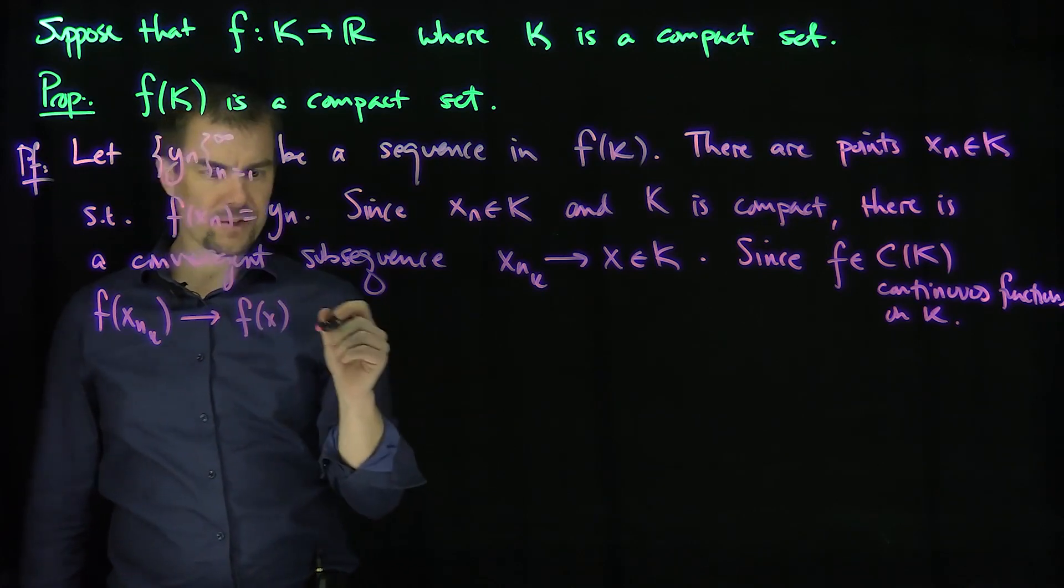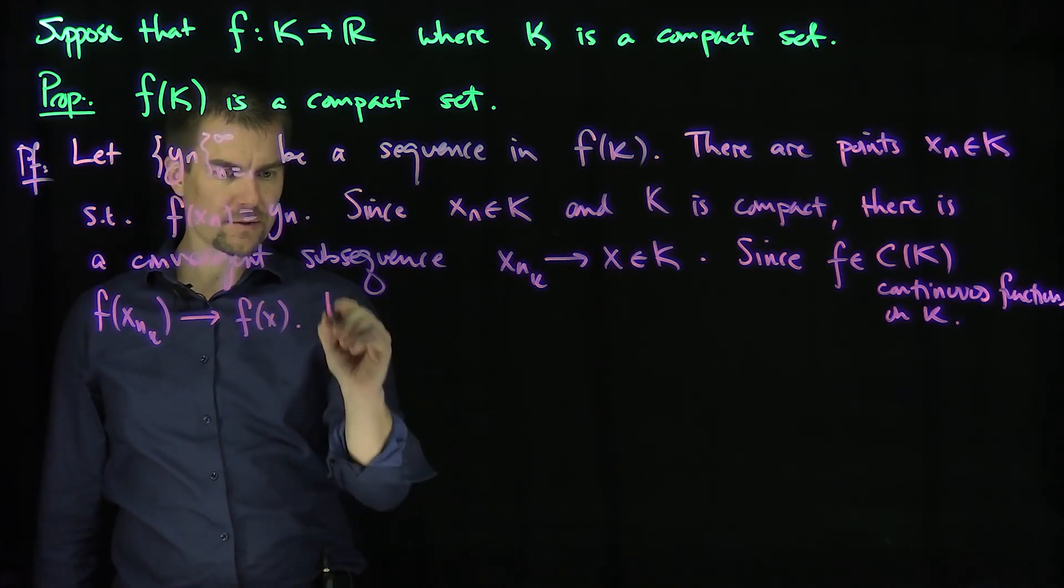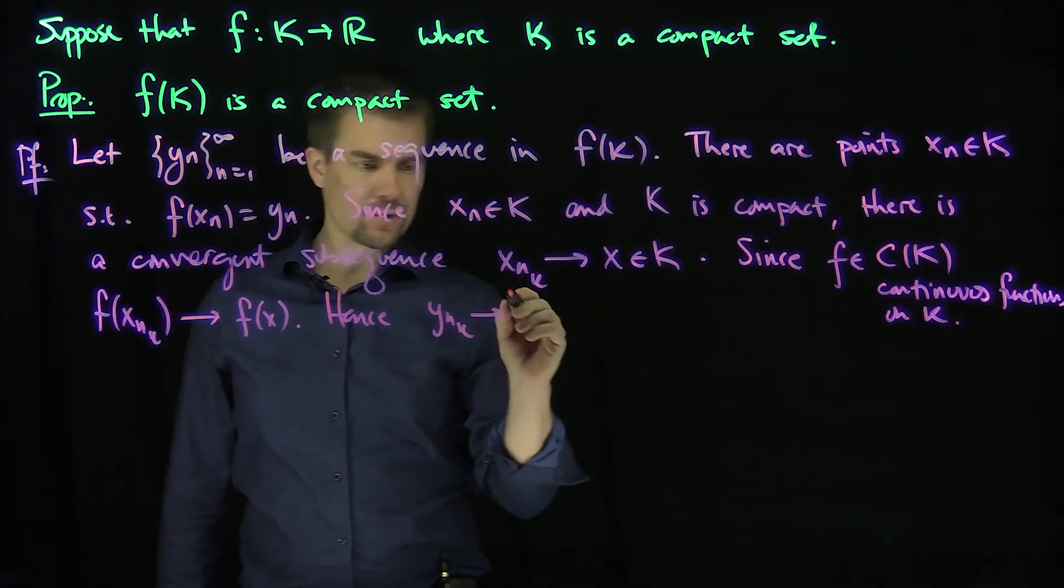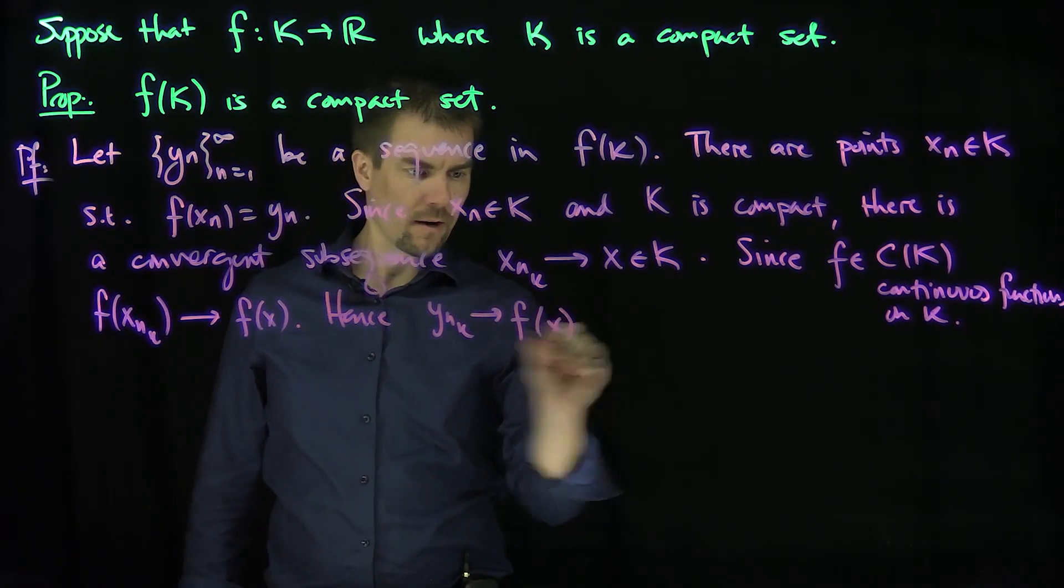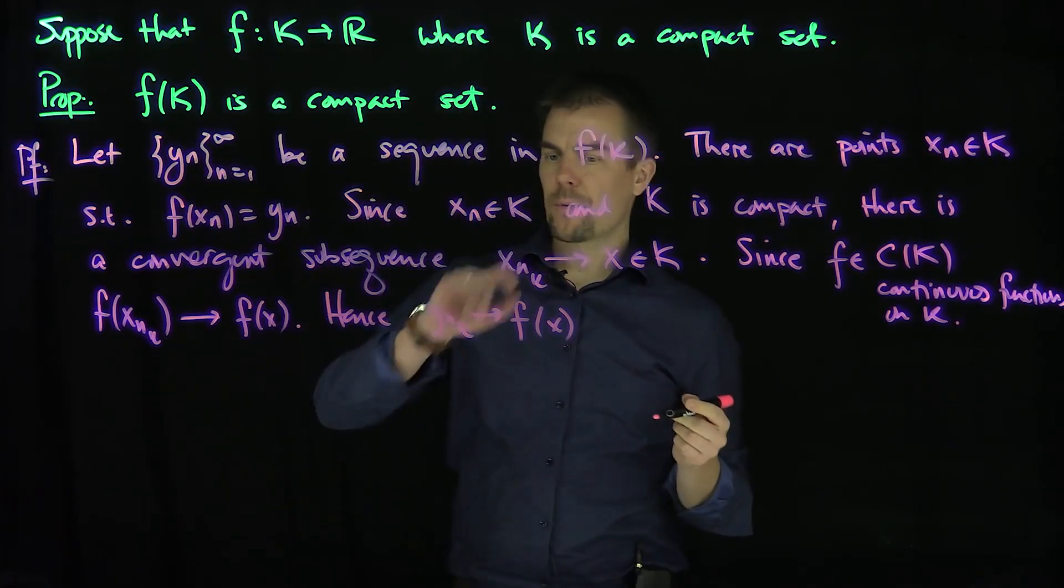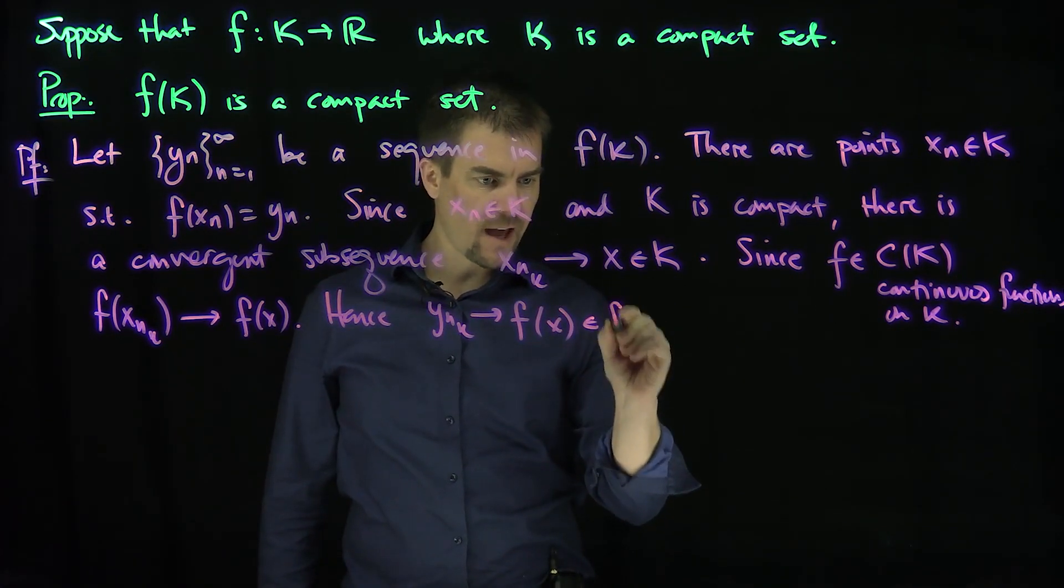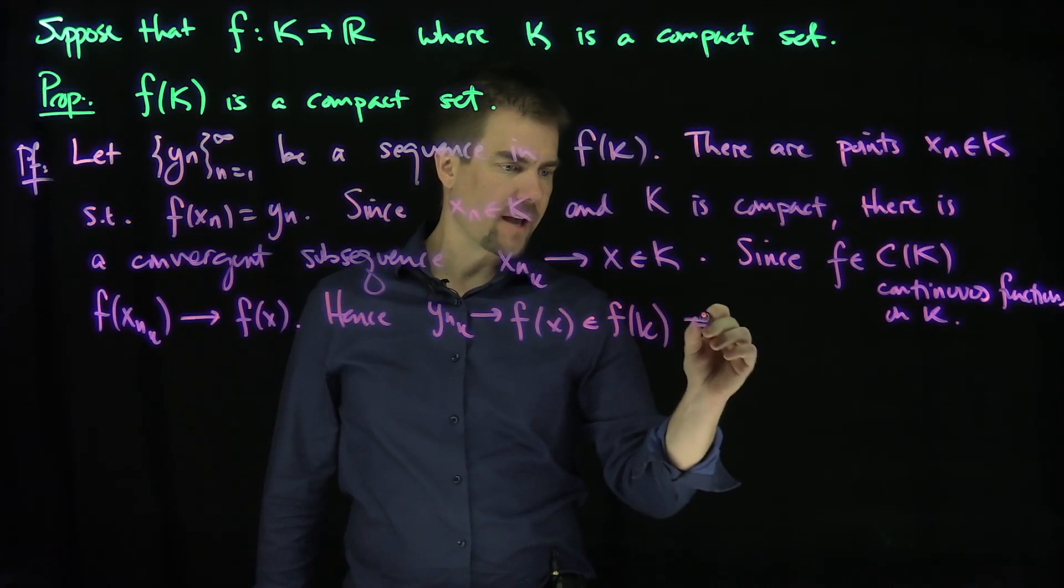This sequence, my sequence y_n, hence y_n_k, converges to f of x. And I have a subsequence of my original sequence that converges to a point which is an element of f of K. And that implies that f of K is compact.